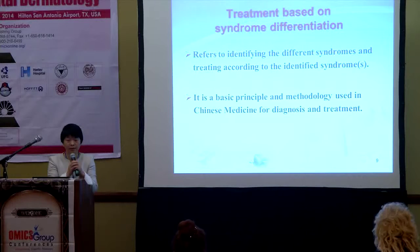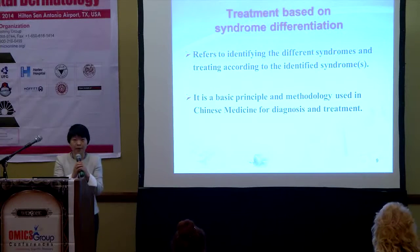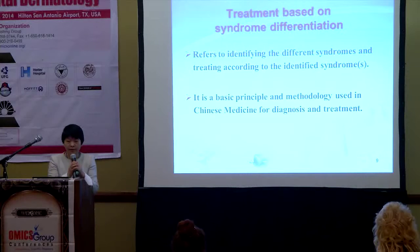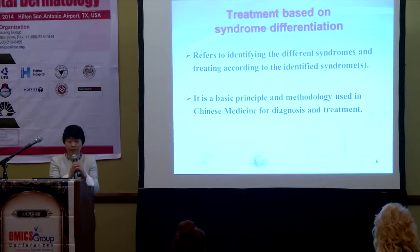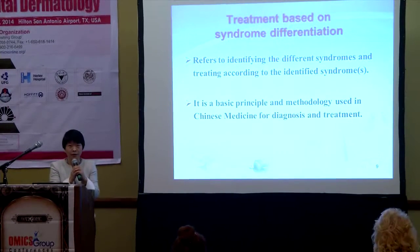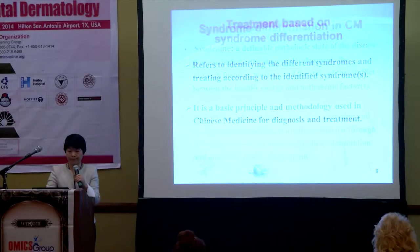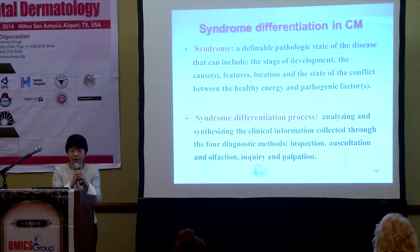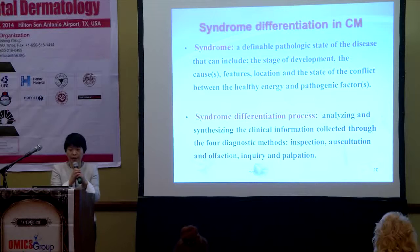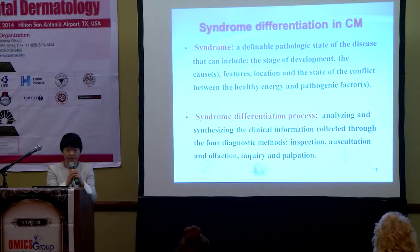The third characteristic of Chinese medicine is treatment based on syndrome differentiation. It refers to identifying different syndromes and treating according to the identified syndromes. It is a basic principle and methodology used in Chinese medicine for diagnosis and treatment. A syndrome is a definable pathological state of the disease that includes the stage of development, the cause, the features, the location, and the state of conflict between healthy energy and pathogenic factors.